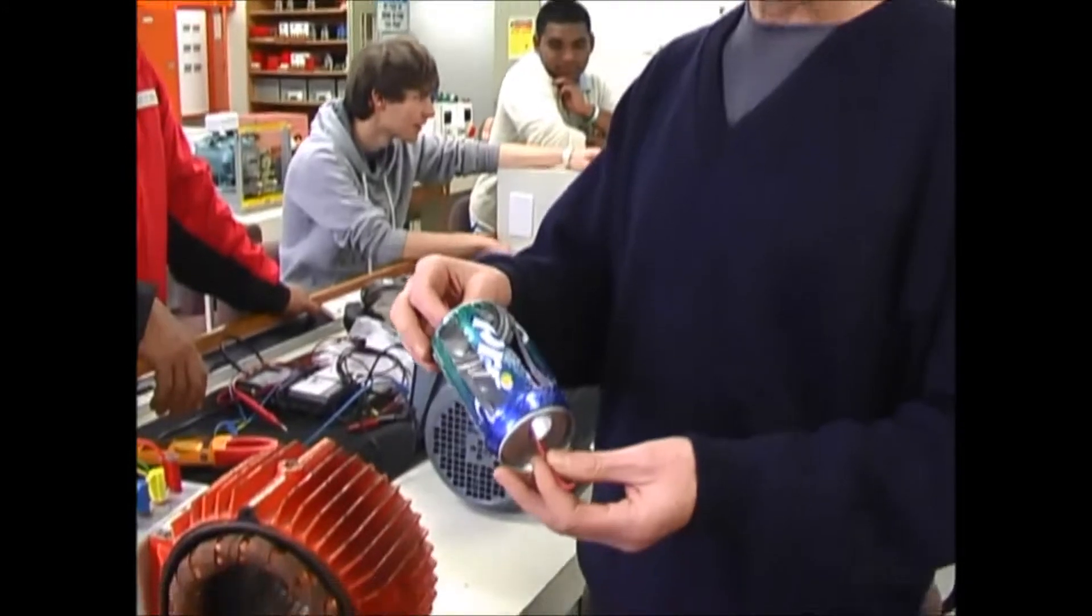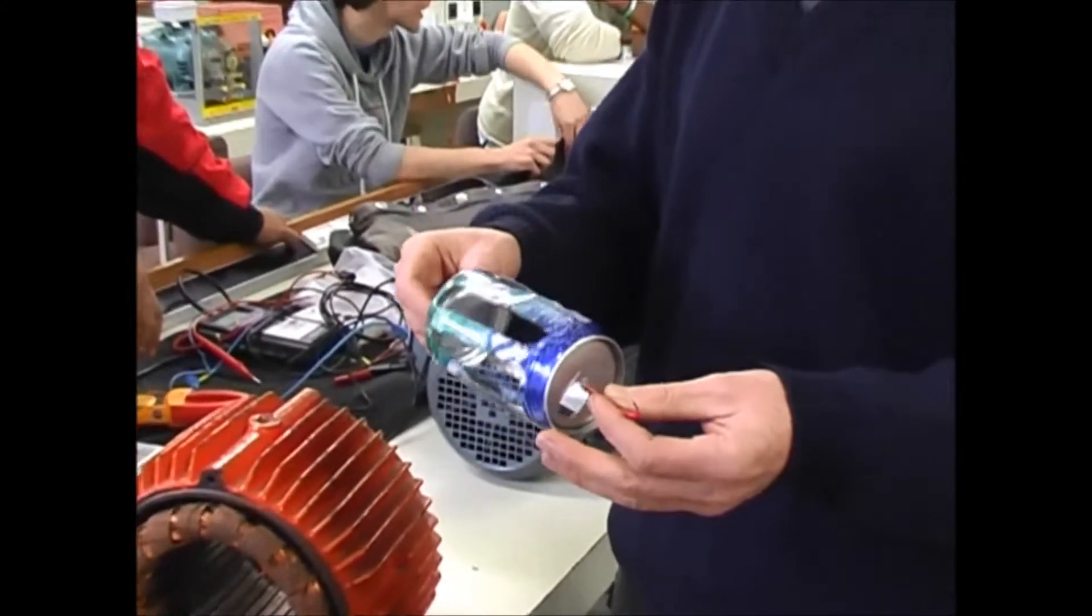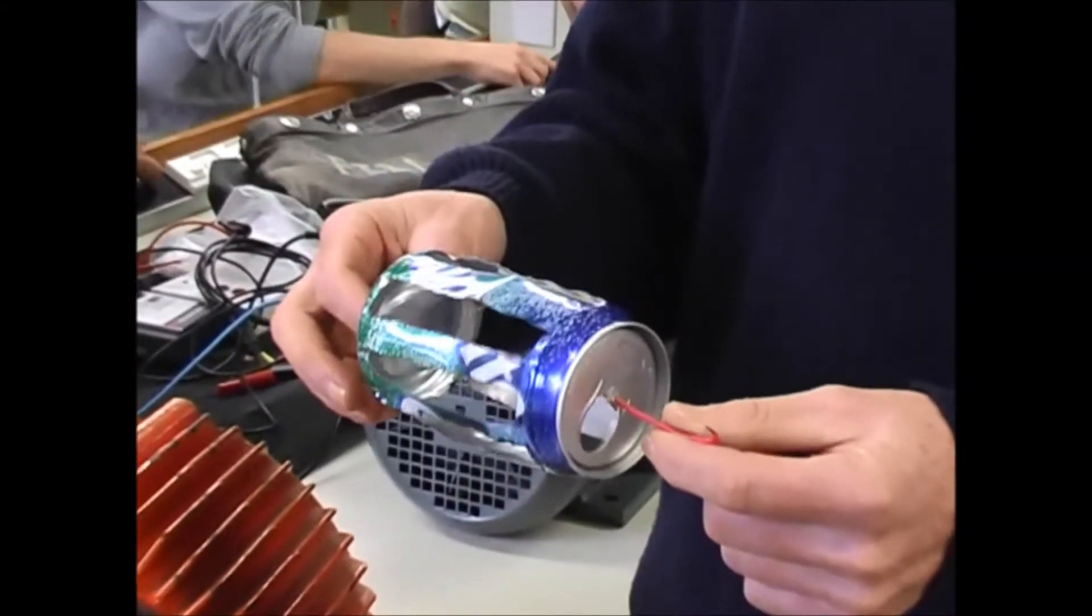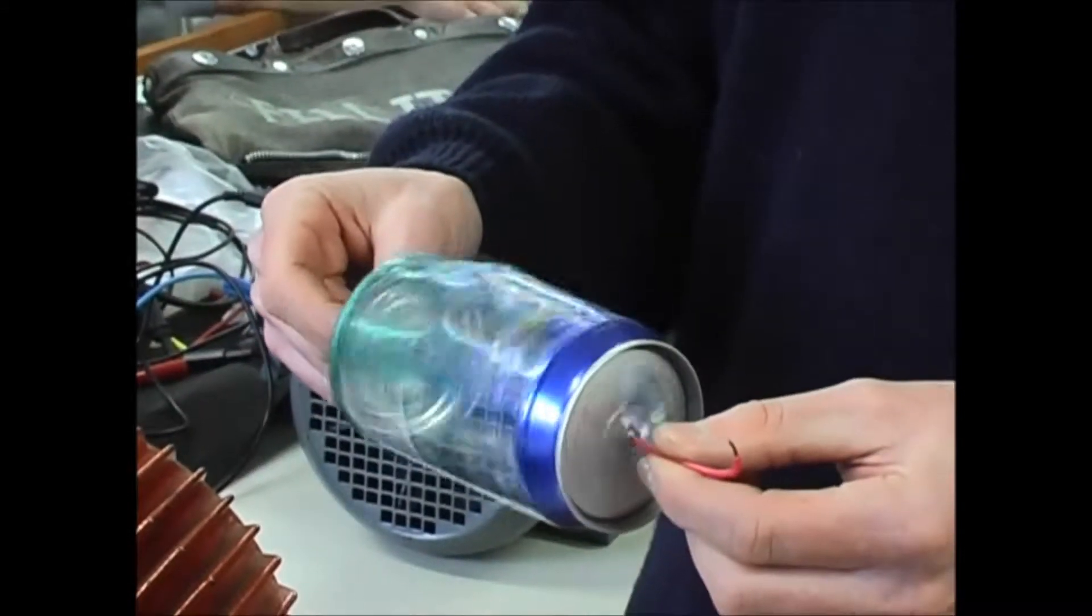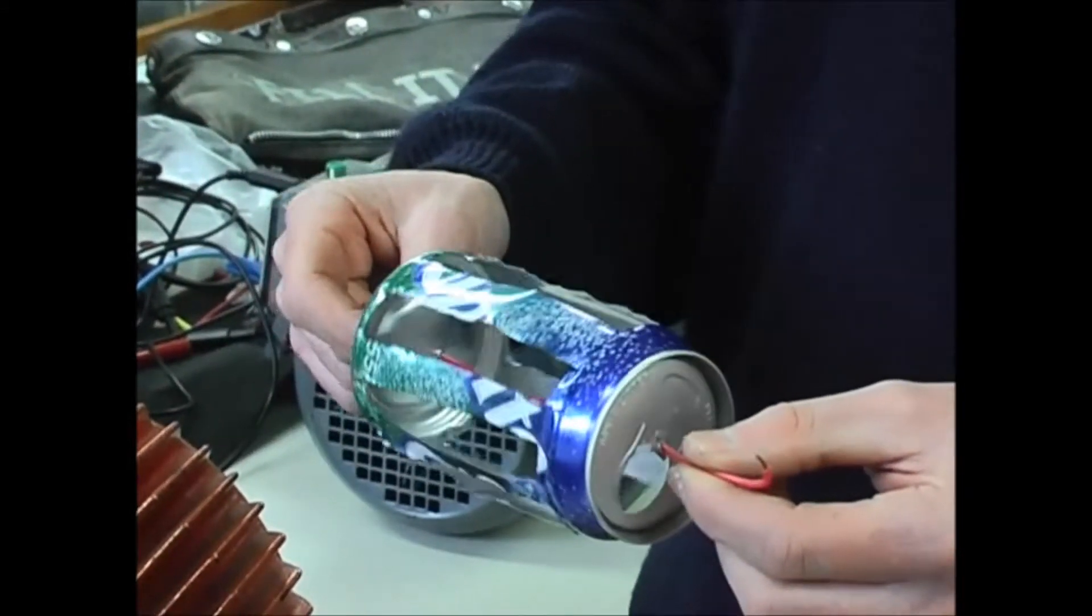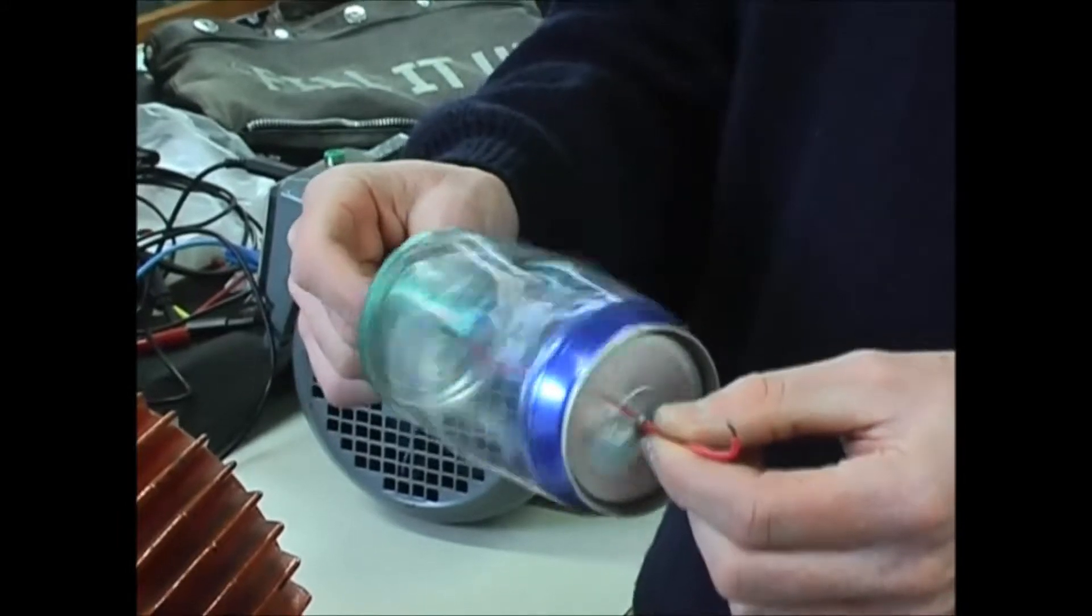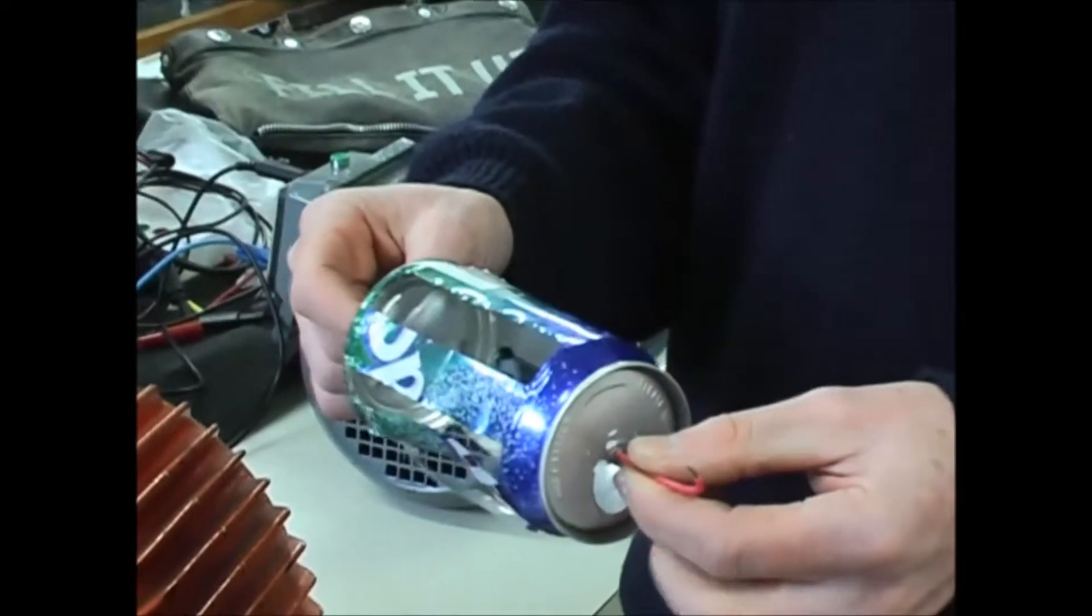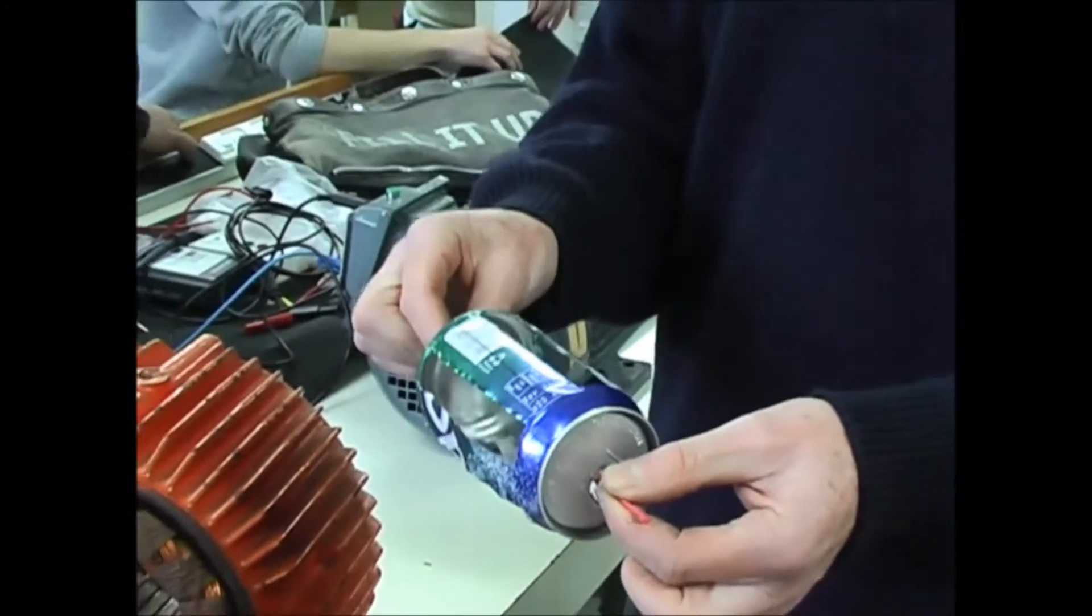So we've reproduced a copy of a squirrel cage by sawing up a sprite can. We've got it as dynamically balanced as we possibly could by putting holes in it with a nail and a screwdriver. And now we're going to put it in a three-phase rotating magnetic field.